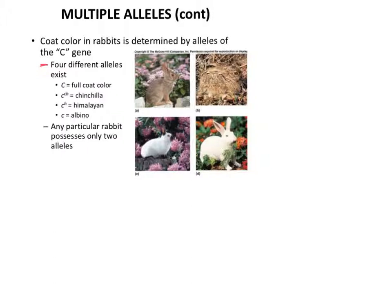So there's the big C for full coat color, there's the C with the CH for chinchilla, there's the C with the H for Himalayan, and then there's just a little c, which is for the albino. And so in the population, like the whole rabbit population, there are all these different alleles, but it's the same just like anything else that we've been talking about before - each rabbit is still only going to have two alleles.